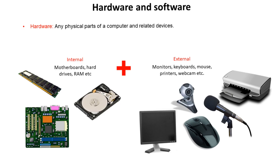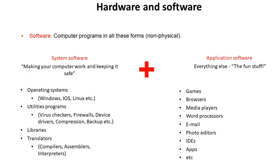When thinking about physical hardware, you can consider all hardware devices to be split into two broad categories. We have internal hardware — the sort of stuff inside the device like motherboards, hard drives, RAM, graphics cards, etc. — and then any devices and hardware which are external to the main computer, for example monitors, keyboard, mouse, printers, webcams, etc.